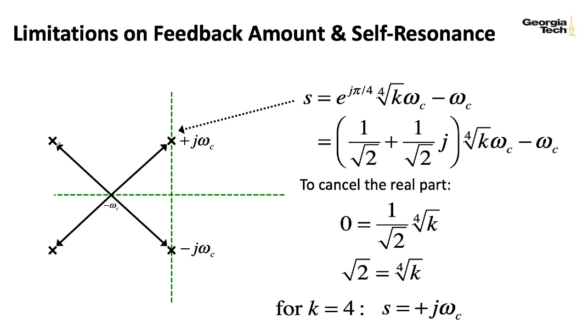So if I'm building the structure, I'm really limited to k's between zero and four. Now that k equal four may sort of in practice slide around a little bit depending on what non-linearities are in the filter that we're not really modeling here.